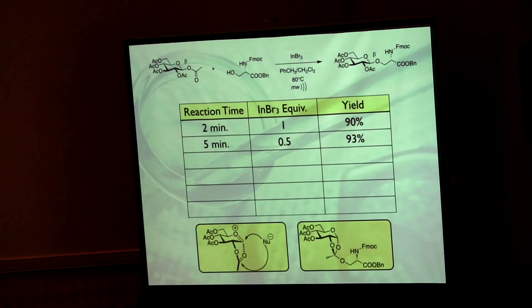So two minutes, one equivalent, 90% yield. If we go to half an equivalent, then it extends our reaction time. And then if we drop it down further, we can go all the way down to 1% indium tribromide, and we still get very good yields of the desired product. So this seems to meet our desire to have a minimally competent Lewis acid. And I should point out here, the chloride doesn't work, the triflate doesn't work, the iodide sort of works but not as good as the bromide.